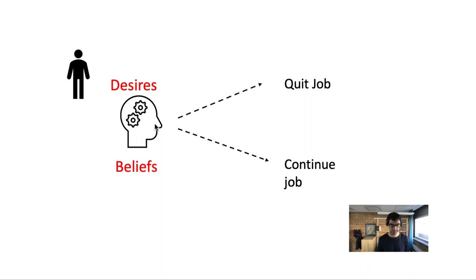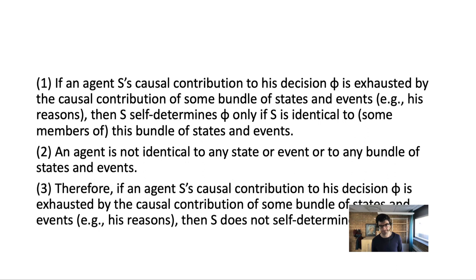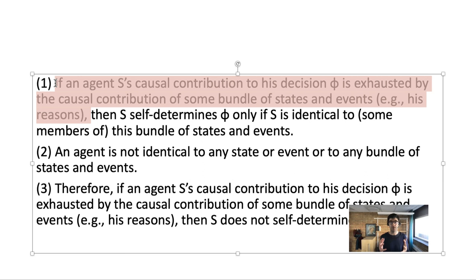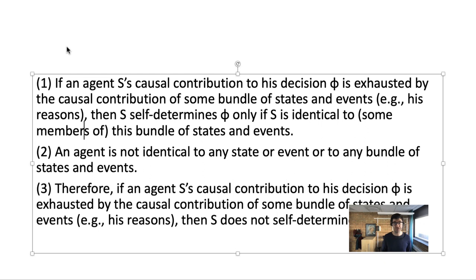The objection then says that if agency reductionism is true, it cannot explain how it can be you yourself who ultimately decides. Here is the argument: if an agent's causal contribution is exhausted by the contribution of states and events involving the agent — which is just what agency reductionism means — then the agent himself can determine his decision only if he is identical to some of these mental states.